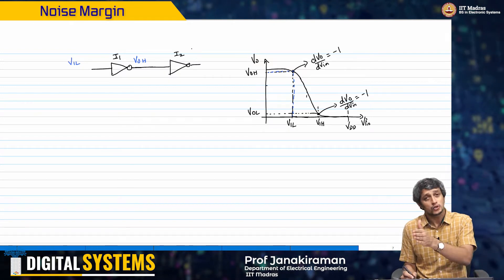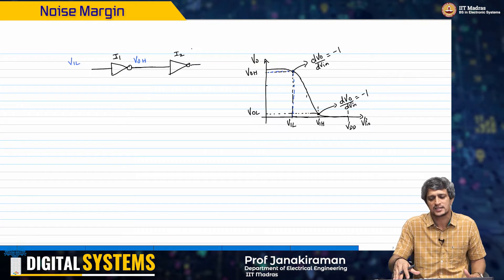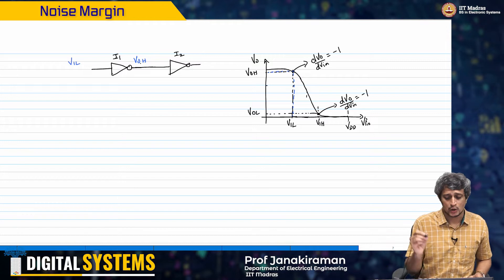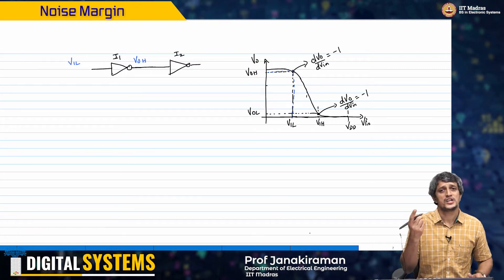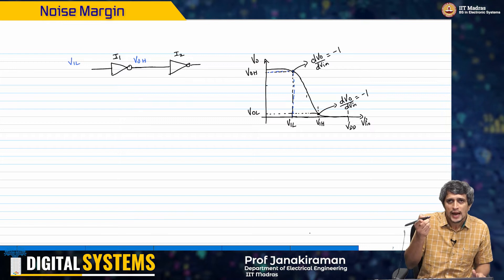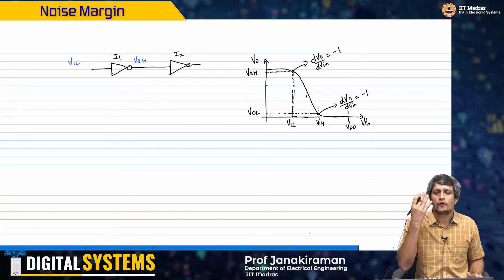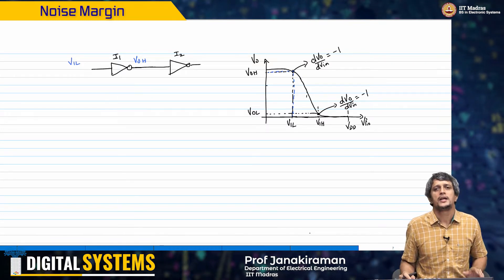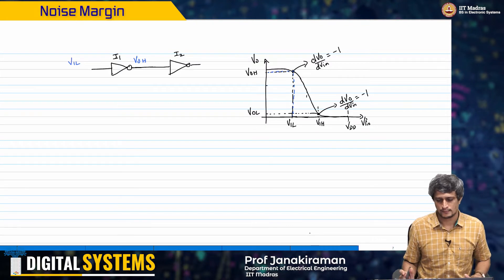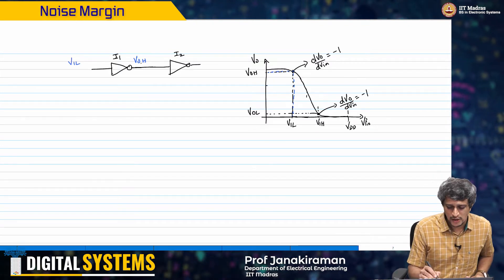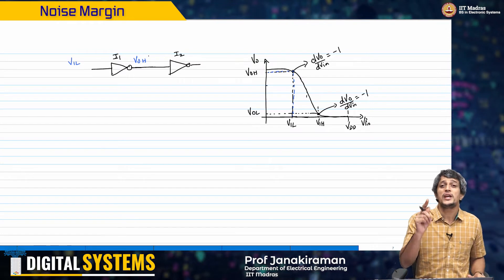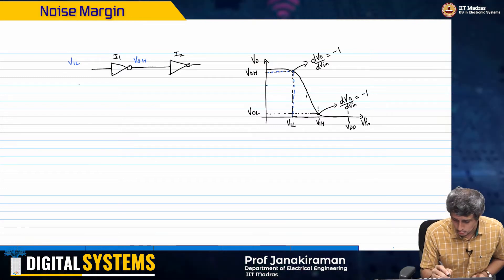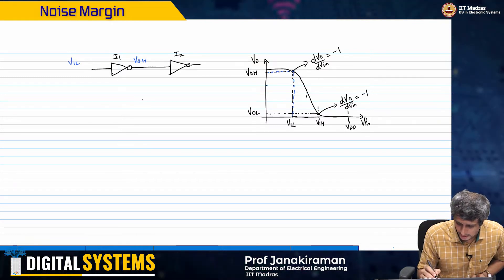Now I want VOH - remember VOH is not VDD, it is something lower than VDD - but I want VOH to be treated as a logic high for inverter I2. So I2 has its own voltage transfer characteristic which is exactly the same as I1.